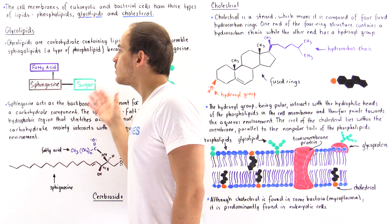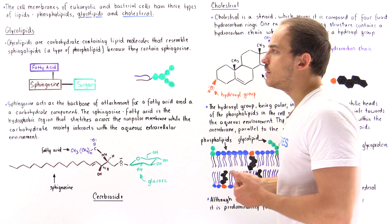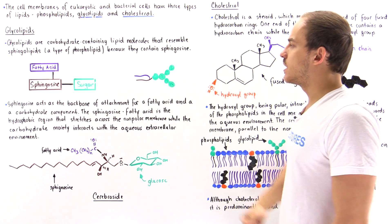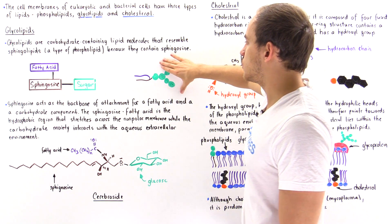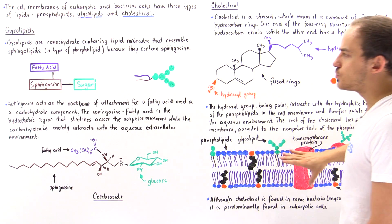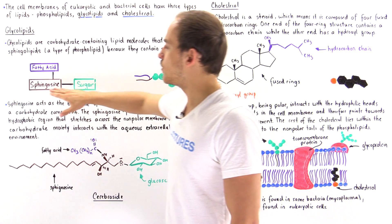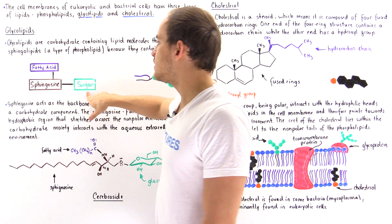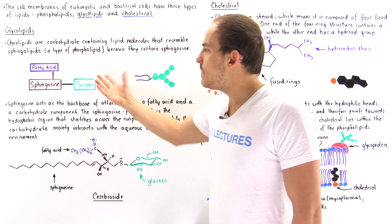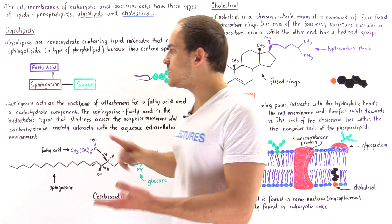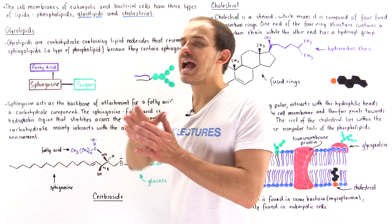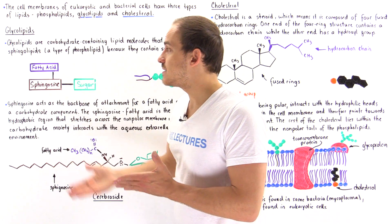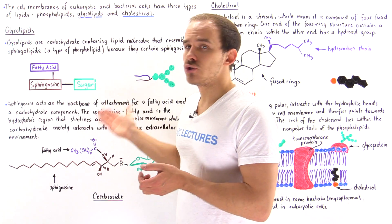This is the general way that we represent a glycolipid using boxes in a slightly different format. The brown structure is the sphingosine, this is the fatty acid, and this is the sugar moiety. Based on this representation, we see that the sphingosine actually acts as the backbone, connecting the fatty acid and the sugar molecule.